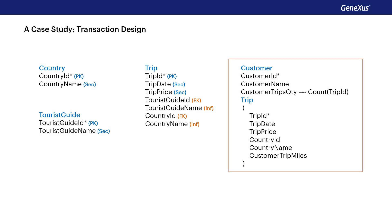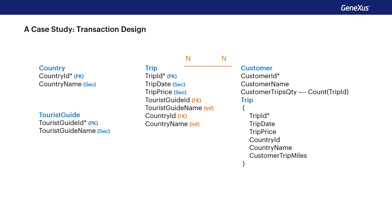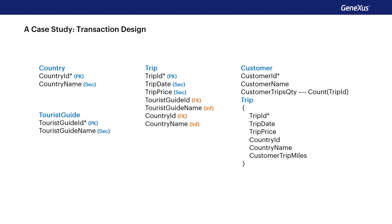Now let's look at the Customer transaction. It's a two-level transaction with TripID as the primary key of the second level, which indicates an n-to-n relationship between Customer and Trip. From this transaction design, GeneXus will create two tables: Customer and CustomerTrip. Focusing on the first level, CustomerID is the primary key and CustomerName is the secondary attribute. The attribute CustomerTripsQuantity has an associated global formula calculation and is therefore not stored in the database.